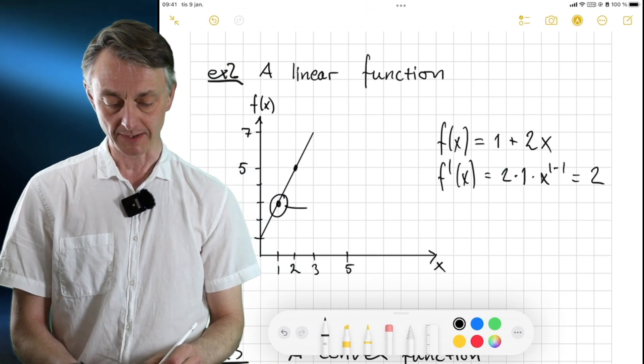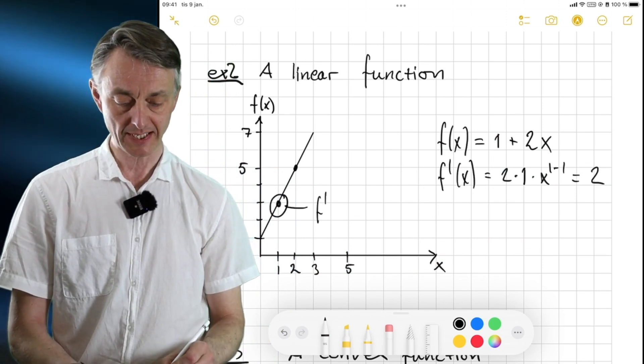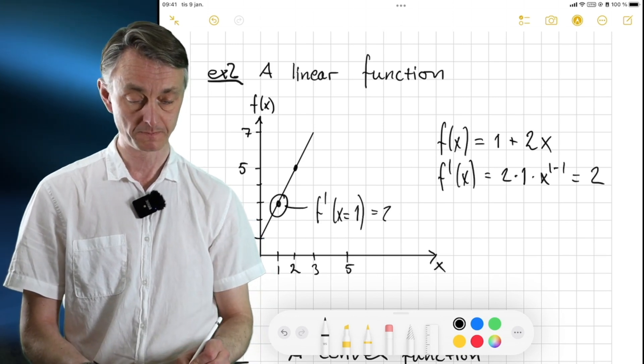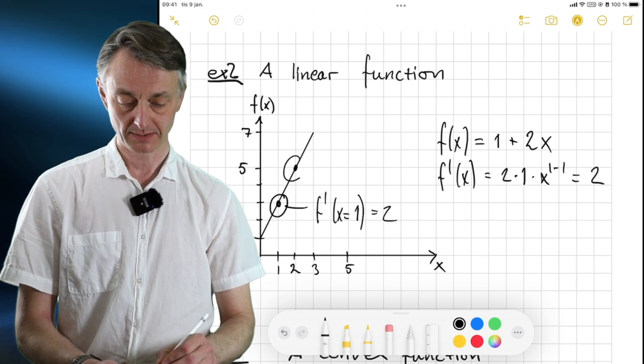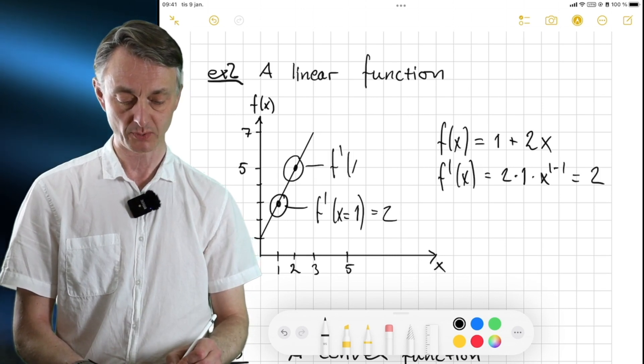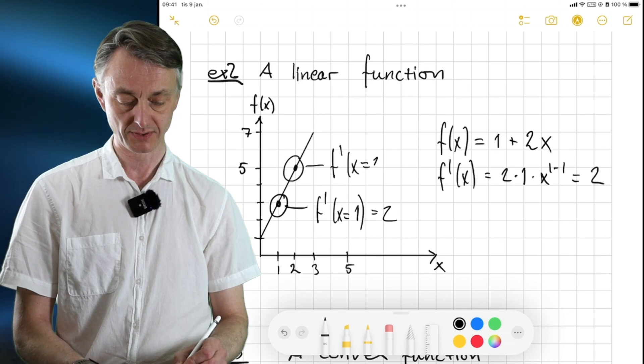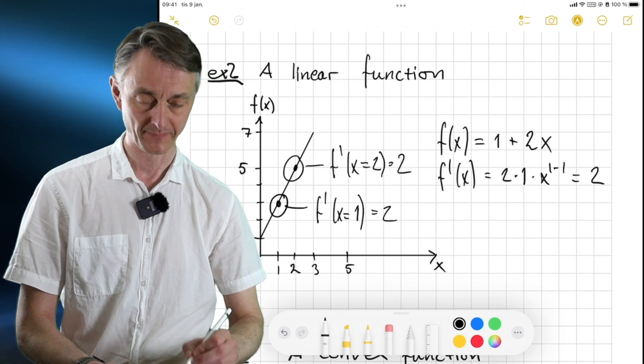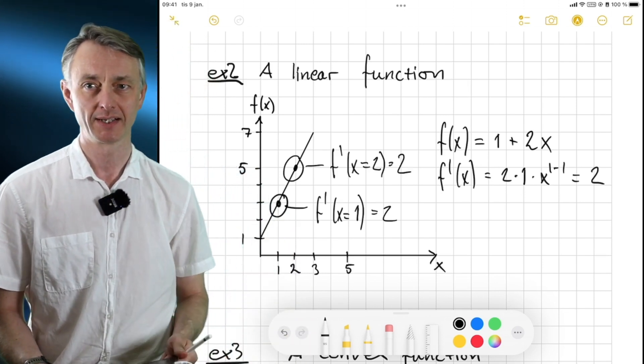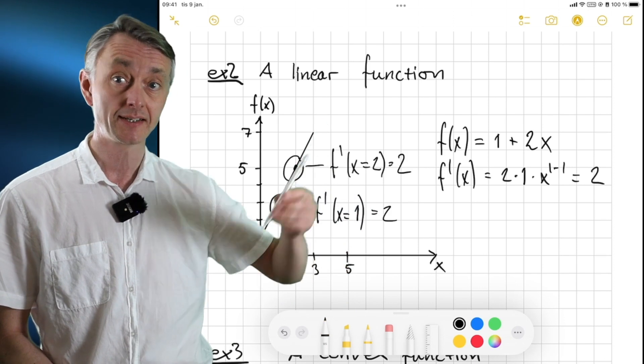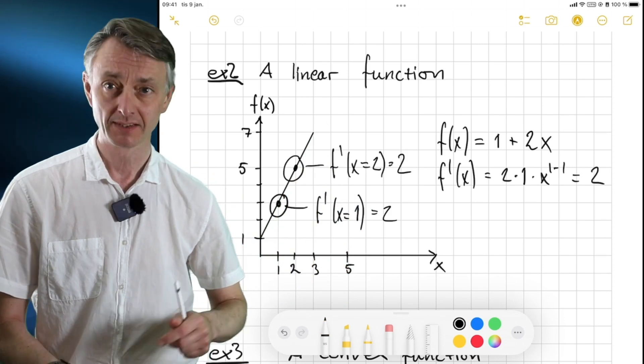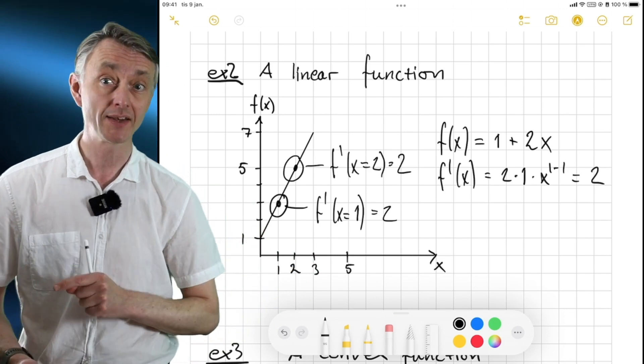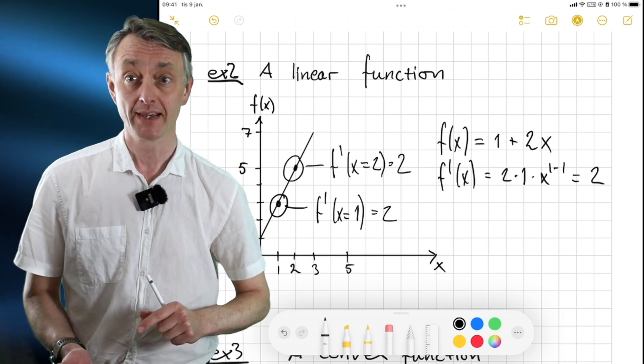So what is the slope here? f prime when x equals 1, well, it's going to be 2. What is the slope here? f prime when x equals 2, it's going to be, yes, surprise, 2 again. So that is the takeaway here, that the linear function, which is a straight line, has a constant slope. It may sound simple, but sometimes I've noticed that students tend to forget this when under stress, doing an exam question.